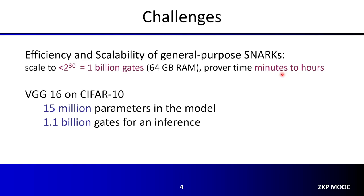You may wonder what are the challenges. We've been talking about general-purpose zero-knowledge proof constructions throughout the lectures. The challenge is on the efficiency and scalability of these SNARKs. For almost all existing protocols, they can scale to at most about 2^30, that is 1 billion gates, on a quite powerful machine.